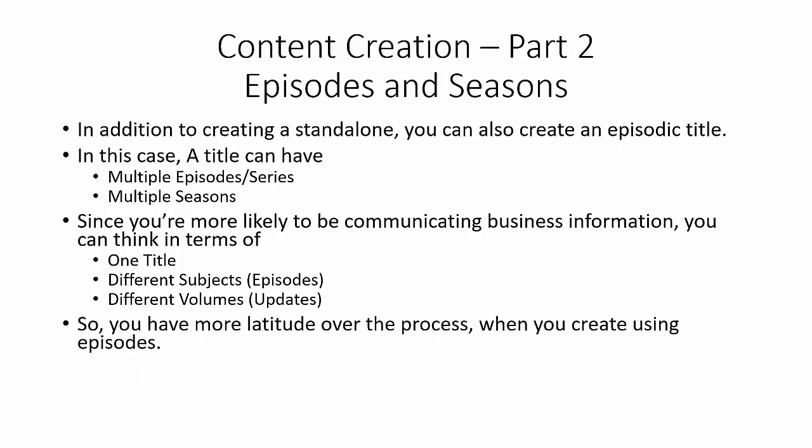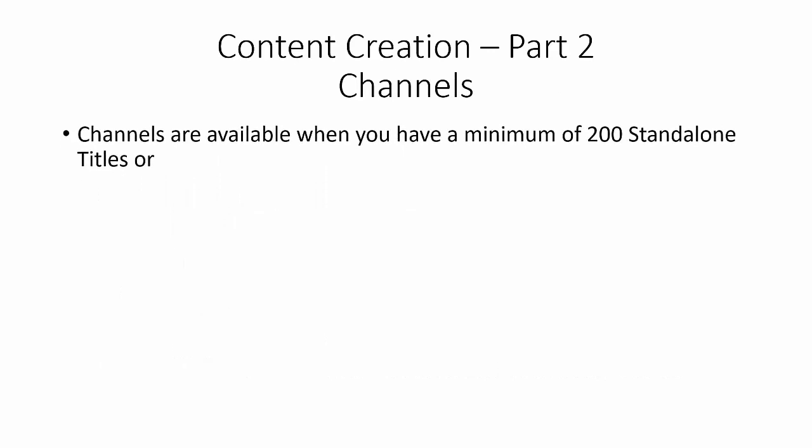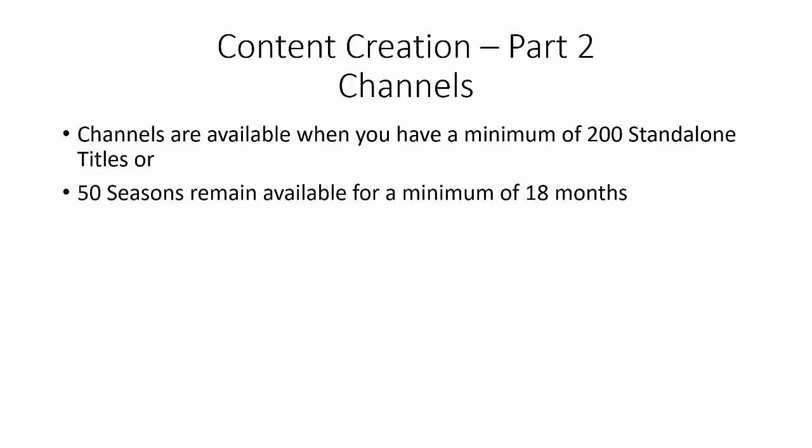When using episodes and seasons, you have more latitude over the process. When you're creating content and branding your graphics, think about how you're going to arrange your series when you place it in Amazon Video Direct. With respect to channels, they are available when you have a minimum of 200 standalone titles or 50 seasons available for a minimum of 18 months. That's quite a bit of content, but it may be something you want to build toward.